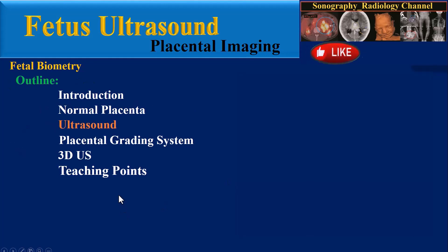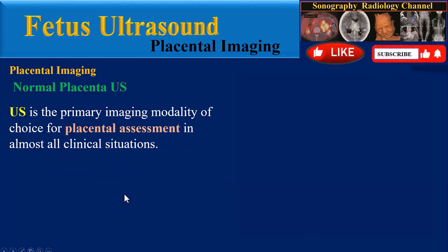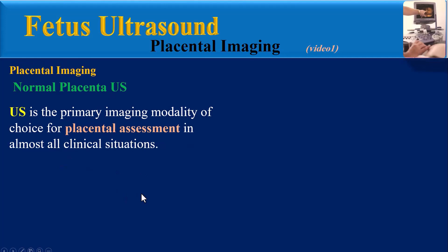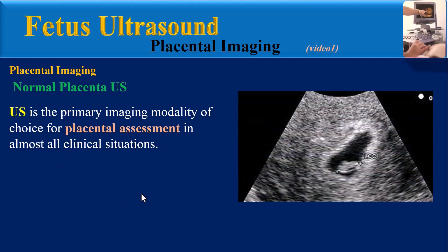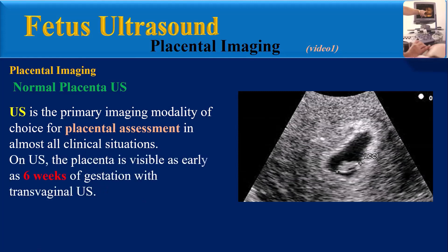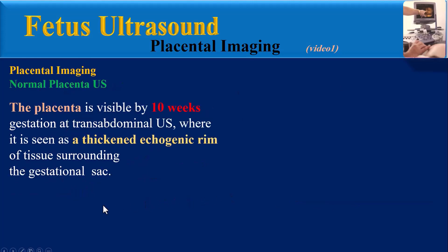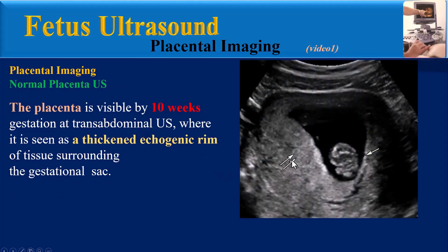Ultrasound features of normal placenta. Ultrasound is the primary imaging modality of choice for placental assessment in almost all clinical situations. On ultrasound, the placenta is visible as early as 6 weeks of gestation with transvaginal ultrasound, and by 10 weeks gestation at transabdominal ultrasound, where it is seen as a thickened echogenic rim of tissue surrounding the gestational sac.